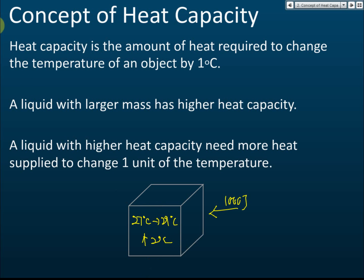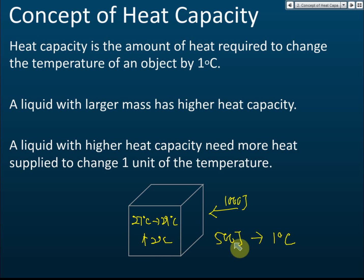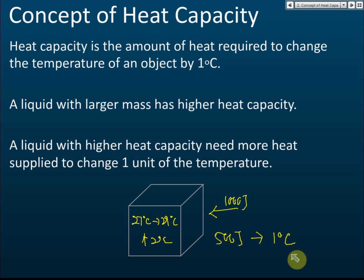From this, we learn that we need 500 joules to increase the temperature of the block by one degree Celsius. 1000 joules increases the temperature by 2 degrees Celsius, so 500 joules changes it by one degree Celsius. This 500 joules of thermal energy needed to change the temperature by one degree Celsius is called the heat capacity. Heat capacity is how much energy is needed to change the temperature of an object by one degree Celsius.